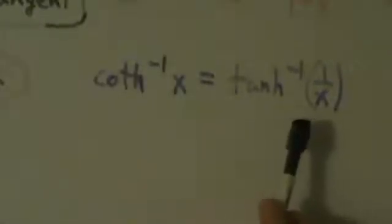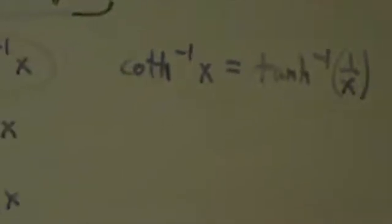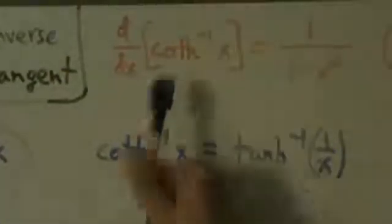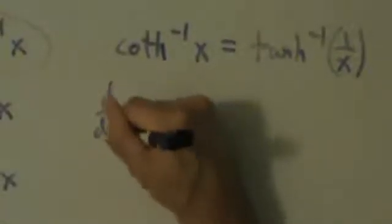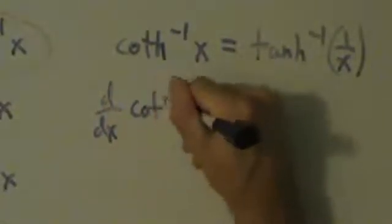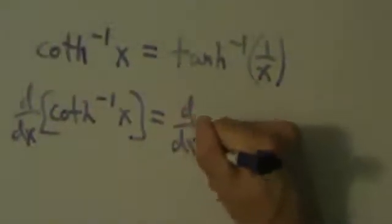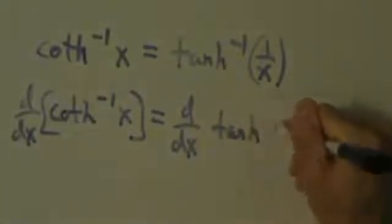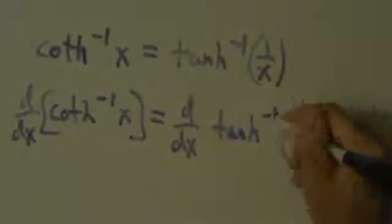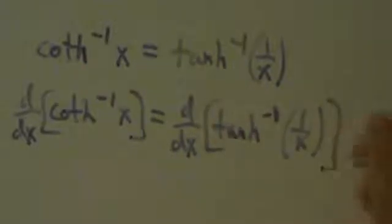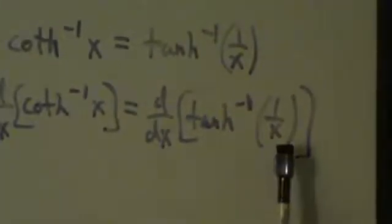By the transitive property, since both equal y, they equal each other. So now we want to take the derivative of inverse coth. d/dx of inverse coth of x is just going to be d/dx of inverse tanh of 1 over x. This is just a chain rule problem. Starting from x, first we do 1 over x, then we do inverse tanh of that. So the outer function is inverse tanh and the inner function is 1 over x.